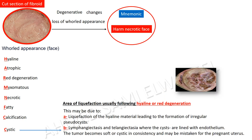Cystic degeneration: areas of liquefaction usually follow hyaline or red degeneration. This may be due to liquefaction of the hyaline material leading to the formation of irregular pseudocysts, lymphangiectasis, and telangiectasis, where the cysts are lined with endothelium. The tumor becomes soft or cystic in consistency and may be mistaken for the pregnant uterus.